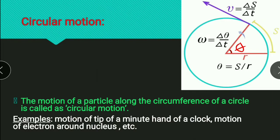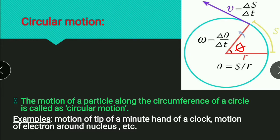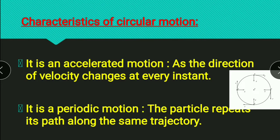We know that velocity is a vector quantity — it has magnitude as well as direction. While performing circular motion, the direction of the particle always changes. Suppose the particle is at a certain point; its velocity is along the tangent at that point. As it moves to another position, the direction of velocity changes along the new tangent. So the direction of velocity always changes at every instant in circular motion, making it an accelerated motion.